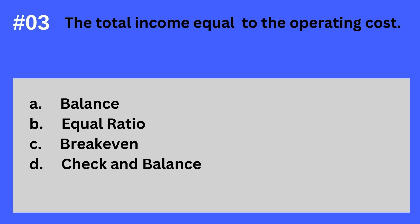Question 3. The total income equal to the operating cost. A. Balance. B. Equal Ratio. C. Breakeven. D. Check and Balance. The answer? It's C. Breakeven. The total income equal to the operating cost — Breakeven.